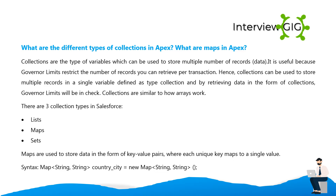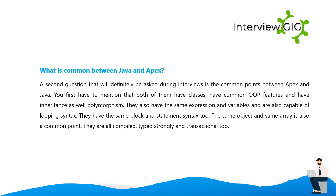Maps are used to store data in the form of key-value pairs, where each unique key maps to a single value. Syntax example: Map<String, String> country_city = new Map<String, String>();. What is common between Java and Apex? Both have classes, common OOP features, inheritance, and polymorphism. They share the same expression, variables, looping syntax, block and statement syntax, and same object and array structure. Both are compiled, strongly typed, and transactional.